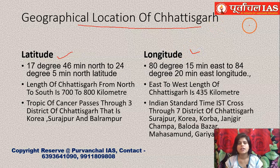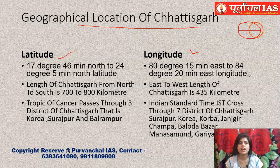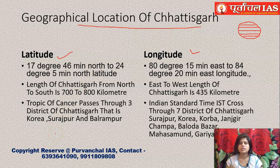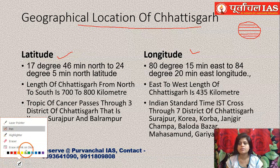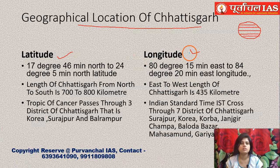There is an imaginary line called the equator dividing the earth into two equal halves — the northern and southern hemispheres. We have the Tropic of Cancer and the Tropic of Capricorn. The parallel lines are known as latitudes, which tell you the location — whether it is in the northern part or in the southern part.